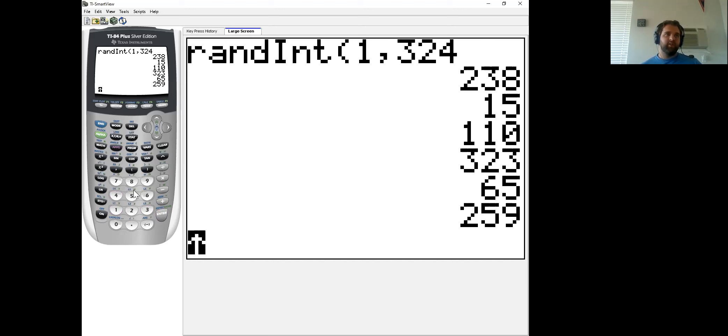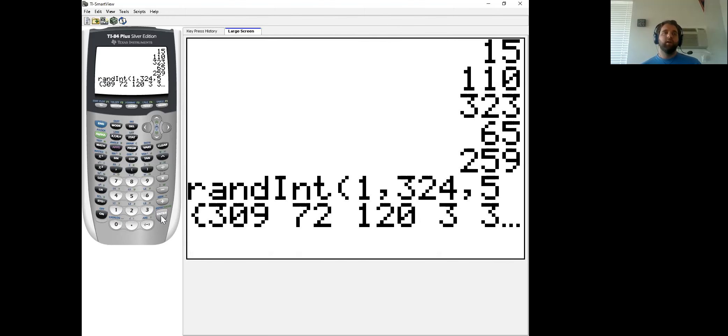Another option you could do, let's go second enter to bring back that equation, is you could do comma. And then if you clicked five, you're going to say this tells it to draw five numbers from one to 324. And so it's 309, 72, 123. You're going to have to scroll to the right. And 303. So that would get you your five numbers. You could do all 40 at once, but you're going to have to keep scrolling to the right, and that's going to be hard to read. So I'd suggest doing it in chunks of five.